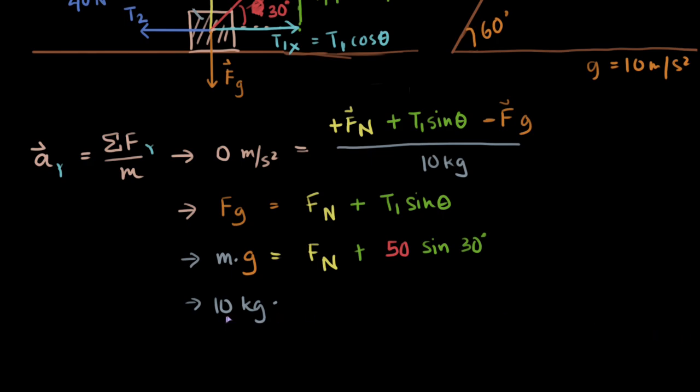We're multiplying that with another 10 meter per second squared. Let us bring this whole thing to this side, and that will just become negative 50 sine theta. Sine 30 degrees is just one half, and that equals to the normal force.